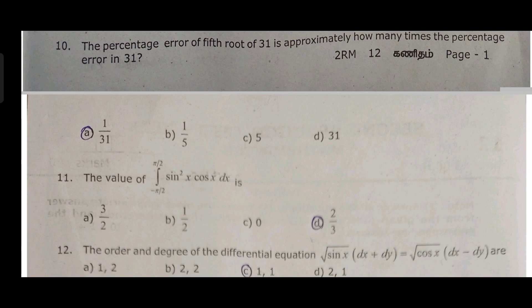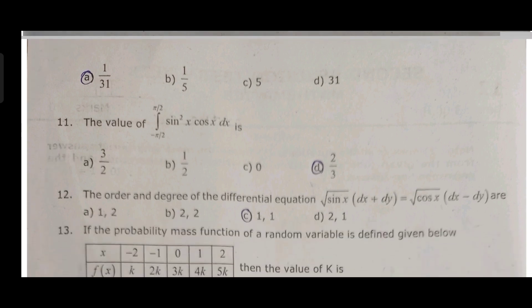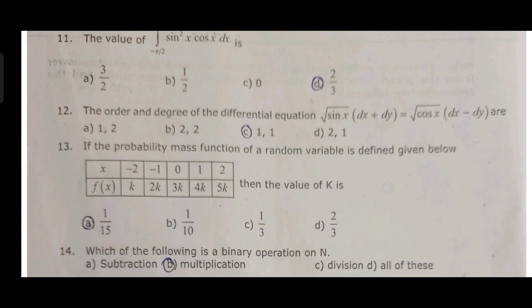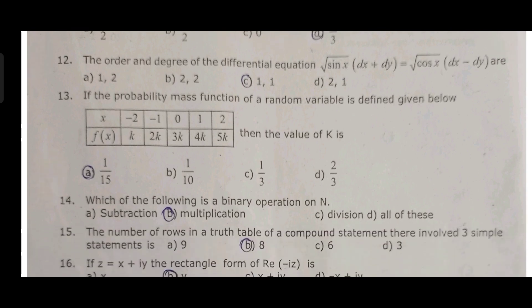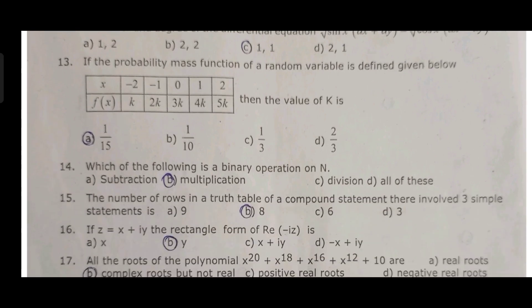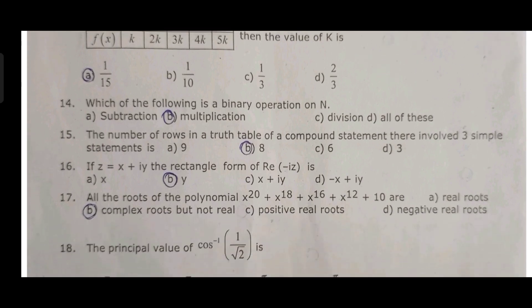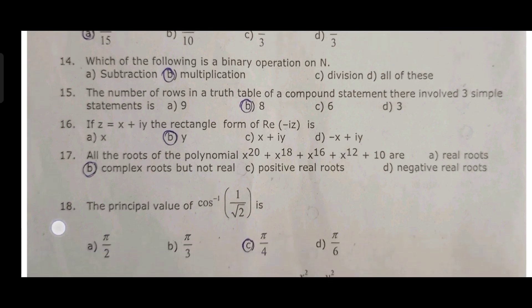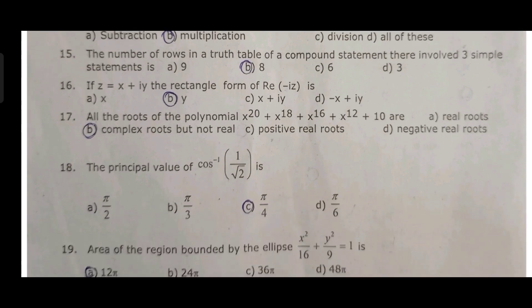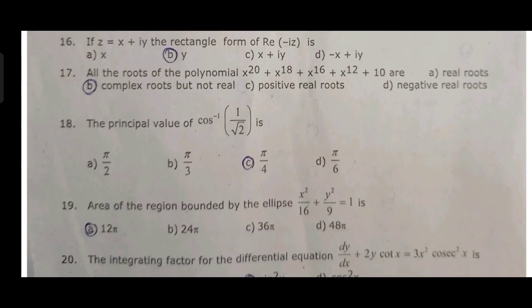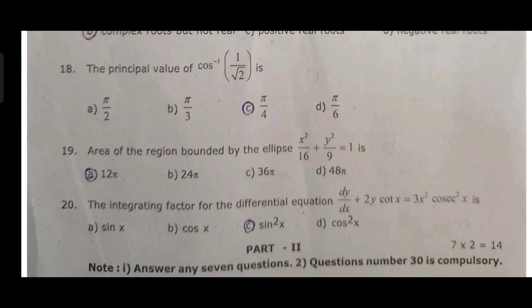Eleventh, D option is 2 by 3. Twelve, C option is (1,1). Thirteenth, A option is 1 by 15. Fourteenth, B option is multiplication. Fifteenth, B option is 8. Sixteenth, B option is y. Seventeenth, B option is complex roots but not real. Eighteenth, C, pi by 4. Nineteenth, A, 12 pi. Twentieth, C, sin squared x.